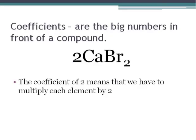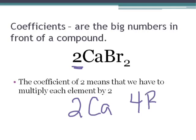Coefficients are big numbers in front of a compound, and what they do is we have to multiply each element by whatever that number is. So in this case, we have the two in front of the CaBr2. That means we have to multiply each of our subscripts by that big number out front. So we have two calciums, and two times two for our bromines. So we have four bromines.